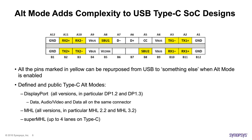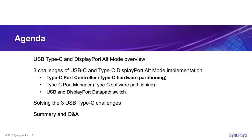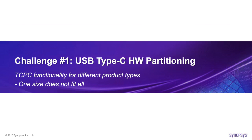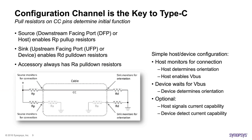The key takeaway from hardware partitioning is that one solution doesn't fit all designs — flexibility is the key to success. The key to Type-C is the configuration channel. There are pull resistors on the CC pins that determine the initial function: a source (downstream facing port, DFP, or host) has a pull-up resistor enabled in host role; the sink (UFP or device) has pull-down resistors; and accessories have stronger pull-down resistors than the device.